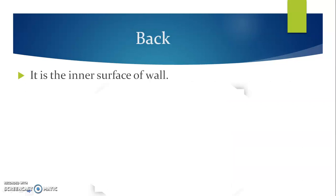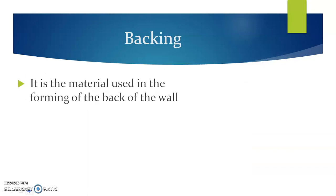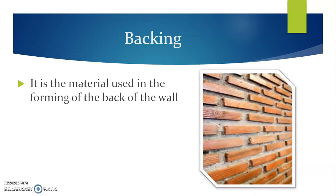Back. It is the inner surface of a wall. This particular figure shows the internal or inner surface of a wall — it is called the back of a masonry construction. Then backing. Backing is a material used in forming the back of the wall. This might be similar to the facing, or in some cases it might not be similar. There are different cases in which we need to use different backing materials, particularly to achieve economy or to have an improved surface from the internal point of view.